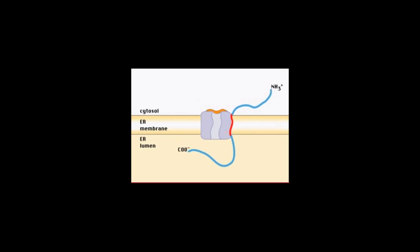The Sec61 opens laterally, releasing the fully formed protein into the membrane, and as it showed there, it almost always forms an alpha helix.